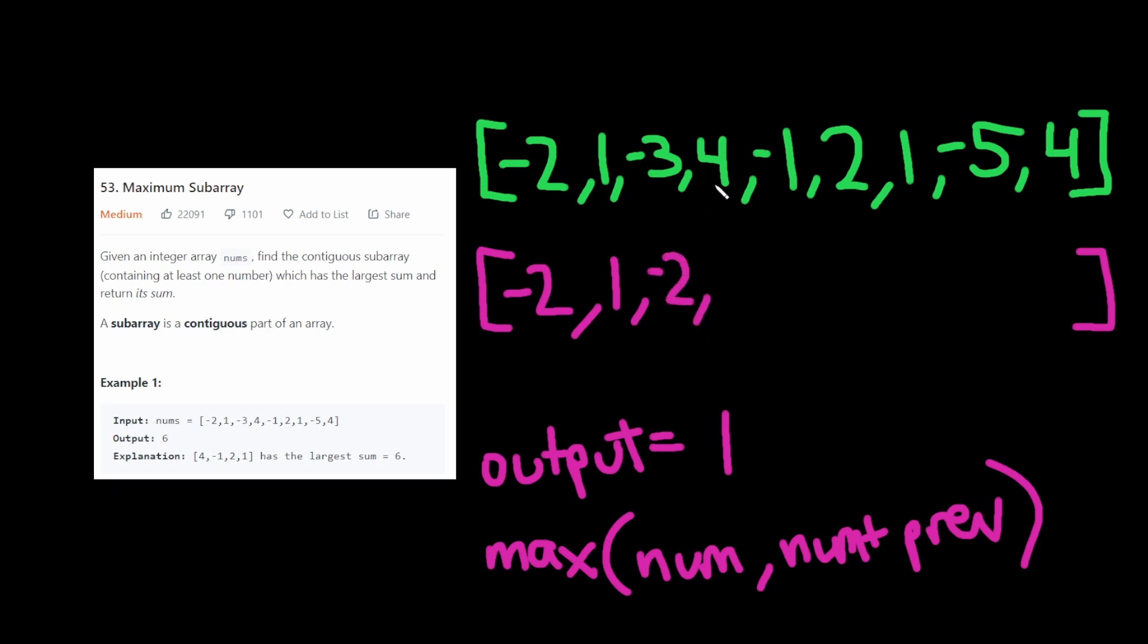Then we get to this 4 and we say okay is 4 bigger than 4 plus negative 2? And it is. Now we put the 4 here. Now that we've seen this 4 our output's actually going to be 4. Okay then we get to this negative 1. We run the algorithm. It's going to be 3. Then we get to this 2. We run the algorithm. It's going to be 5. Now we replace the 4 here with 5.